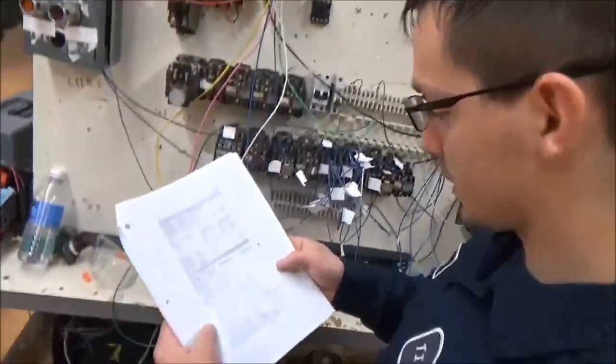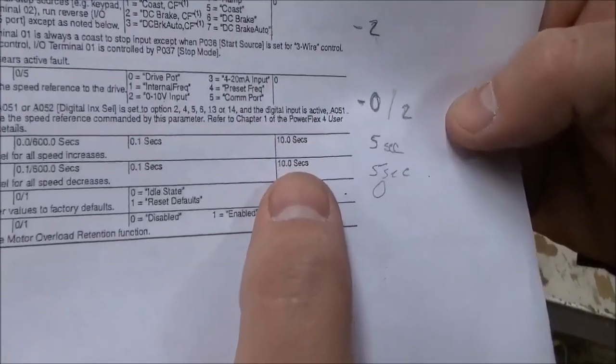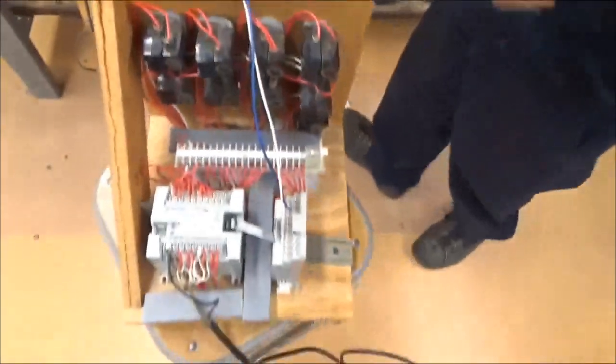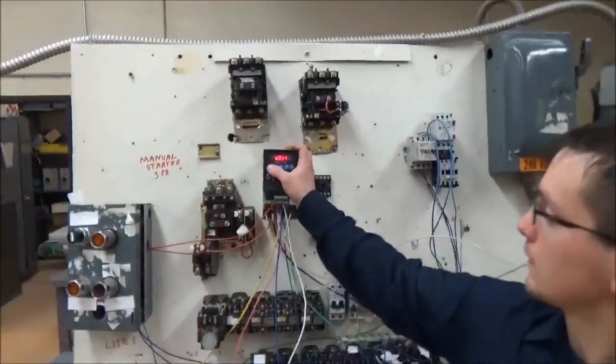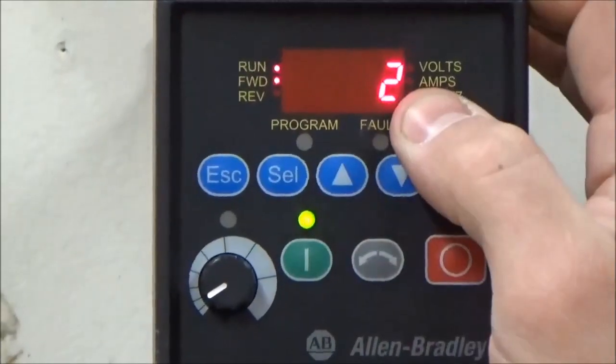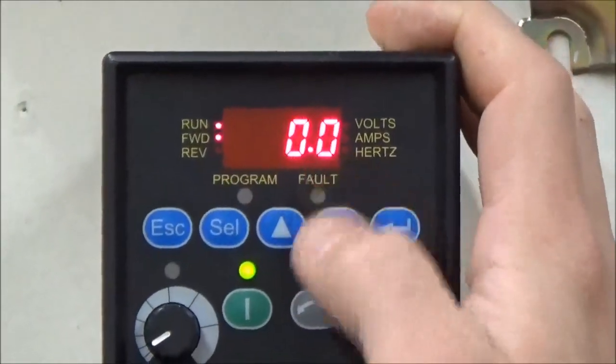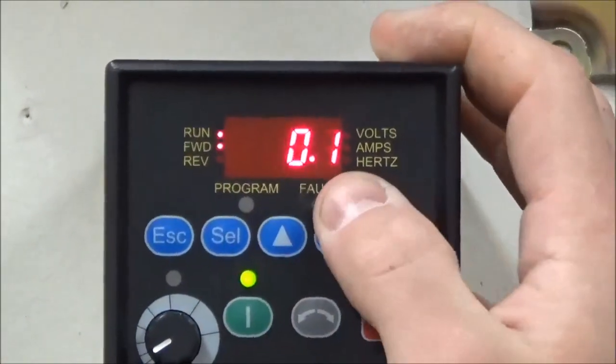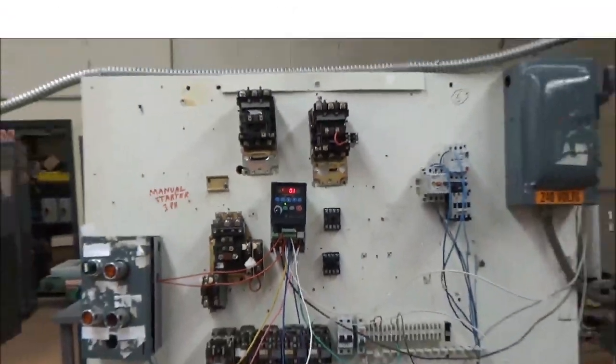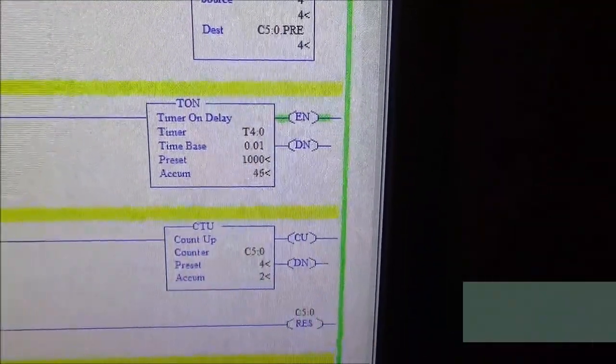Alright, so another thing we had to do is change our speed reference to 0 to 10 volt input, which is 2 on our P38. And then we had to, for our P39, our P40, which are our cell and D cell, we had to put a 0. That's for a 0 to 10 volt. 0, that's our cell. And 4 is our D cell. Minimal is 0.1.